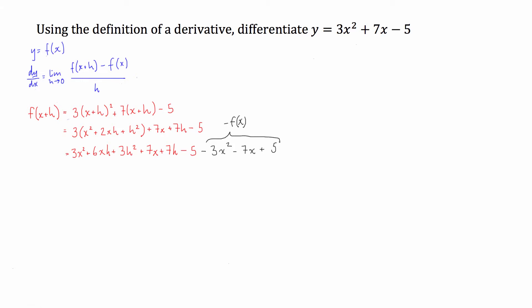Now what we can see is that we've got a 3x² here minus 3x² here. They will cancel out. We've got a 7x here, we've got a negative 7x there. They're going to cancel out. We've got a minus 5 here, then a plus 5 here. So they're going to cancel out.